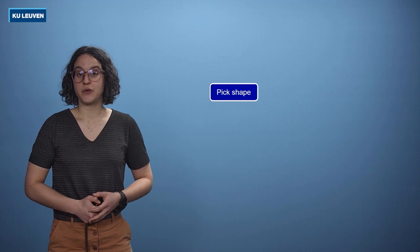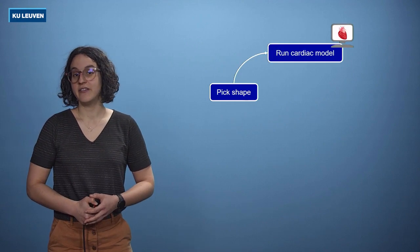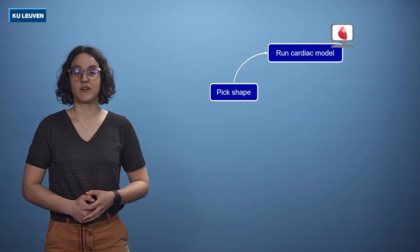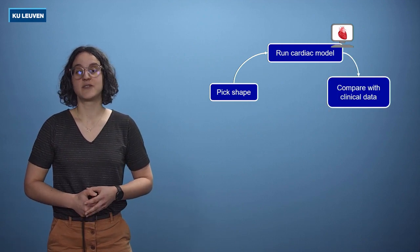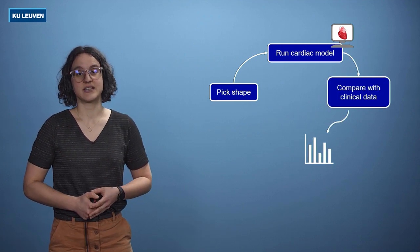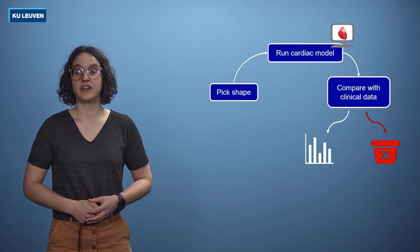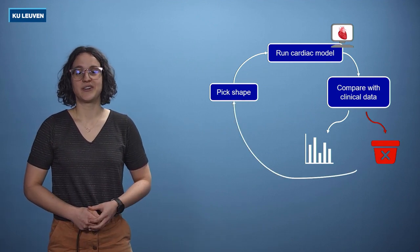The idea behind this algorithm is simple. First, you pick a random shape. Then, you generate a surrogate of the clinical data based on this shape. If the new data is sufficiently likely, the shape is accepted. If not, it is discarded. And then we go back to the start.